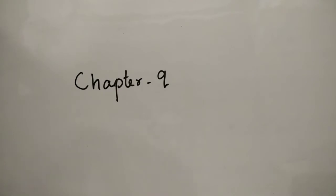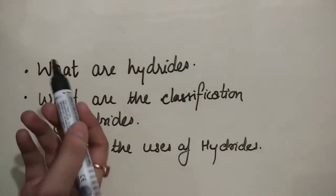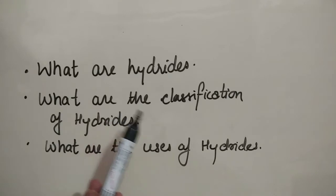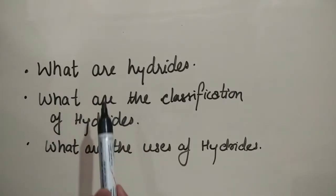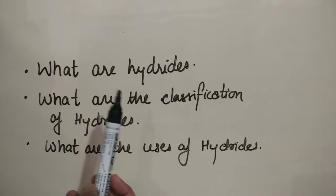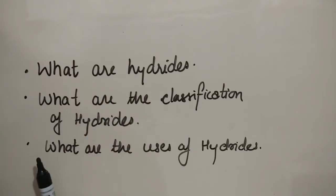In this video, we are going to discuss chapter 9 of class 11th chemistry, i.e. Hydrogen — specifically one of the compounds of hydrogen, that is hydrides. This video covers the following topics: what are hydrides, what are the classifications of hydrides (i.e., in how many categories hydrides can be classified), and what are the uses of these hydrides.